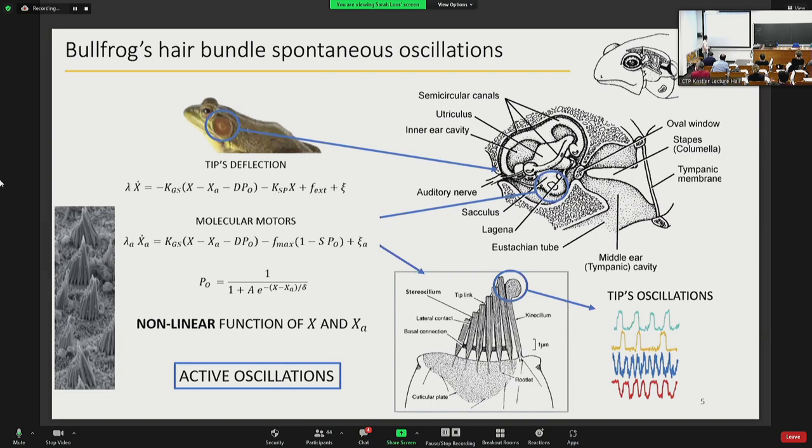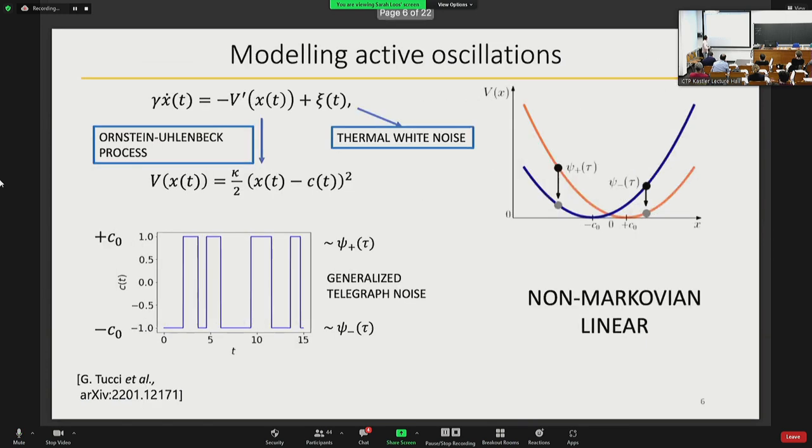What we have in mind is to mimic the behavior of these trajectories by introducing a simpler model. The model we consider is a generalization of the Ornstein-Uhlenbeck process. This is thermal noise, this is the quadratic potential from which the particle moves. Here the center of the potential is itself a stochastic process, a dichotomous stochastic process which takes two values plus and minus c_0. The time in each of the two states is drawn from some waiting time distribution which in general can be of any type. In this sense the system is non-Markovian. However, the fact that we have a simple quadratic potential makes the dynamics linear, so the equations are linear. This means that you can do calculations, but they are difficult.